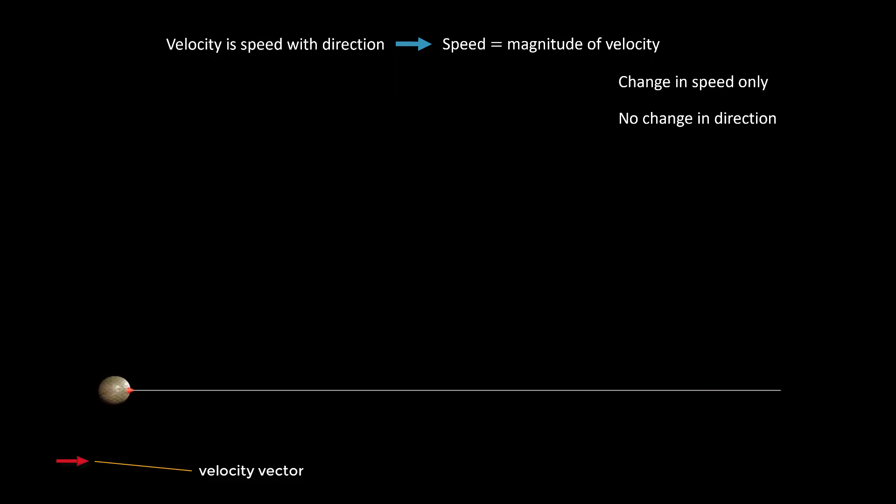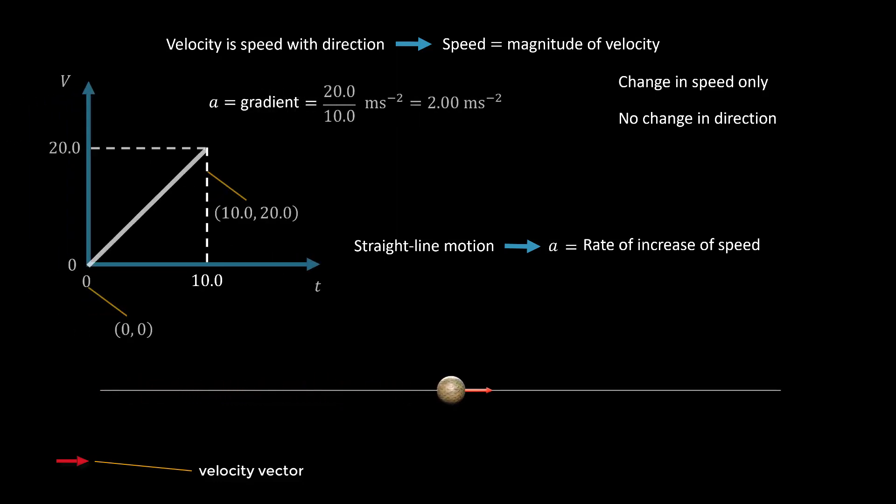This situation is referred to as straight line motion. And in this case, the value of the acceleration is equal to the rate of increase or decrease in speed. The rate of decrease in speed is simply the deceleration. In this case, the gradient of the speed-time graph will always be equal to the acceleration.